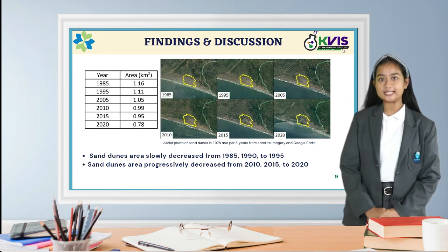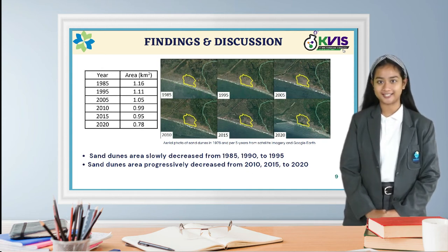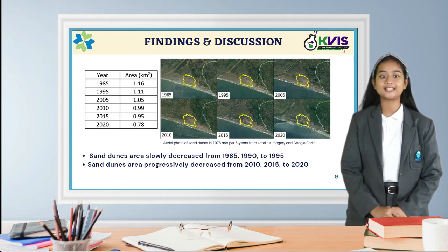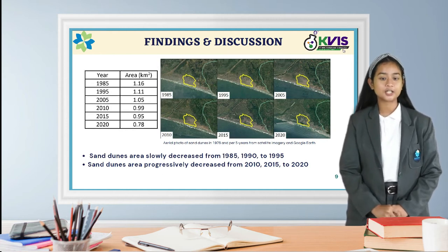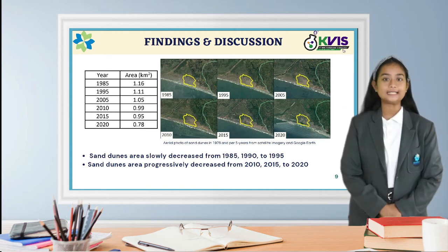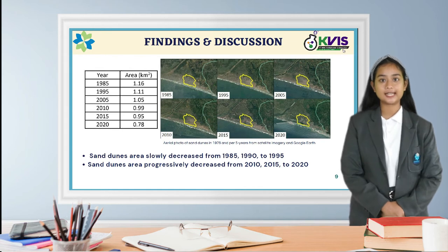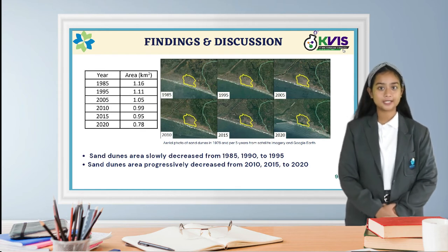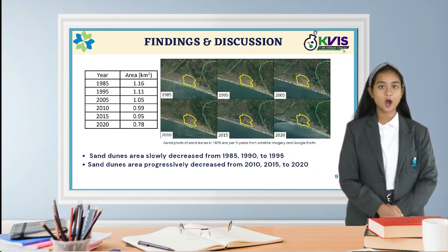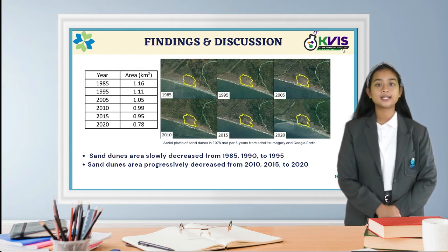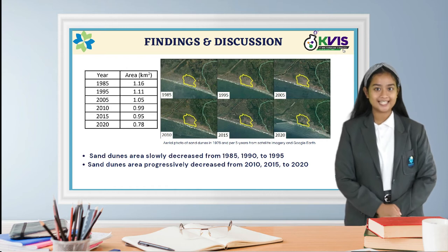Now we have come to the findings and discussion. This research identifies the deformation of Parangtritis Sand Dune and the effect and role of vegetation spread using map data comparison over five years. In 1980, afforestation was carried out in the coastal areas, and after that, vegetation grew upon the sand dune. Focusing on the primary zones, it can be seen from the figure that the area of the sand dune decreased slowly from 1985, 1990, to 1995.